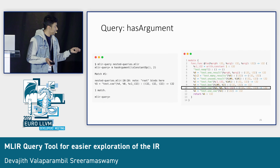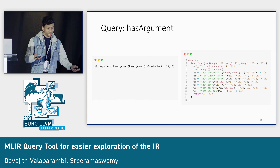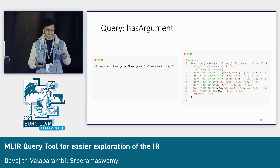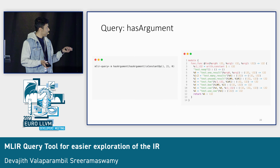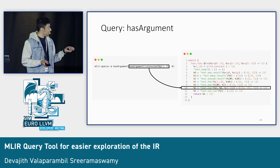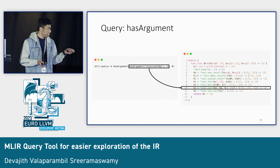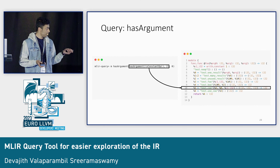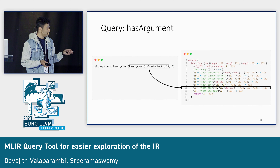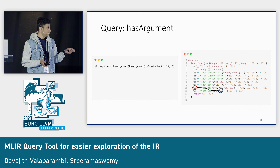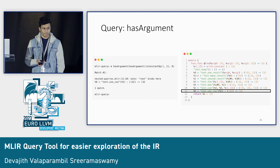You can even go further with this — you can nest it twice, thrice, or a hundred times, as many times as you want. From the previous slide we saw hasArgument(isConstantOp(), 2) matches that operation. Now it's hasArgument of that result at index 0, and that should match test.useq. And it does match test.useq.